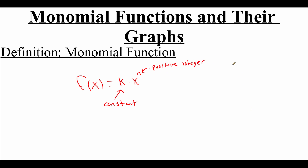Some very basic functions like f of x equals x or f of x equals x squared are monomial functions because they have one term in them. Their constant in the front, their k value, would just be one. On our plain x function its power would just be a first power, and on our x squared function the power would just be two.